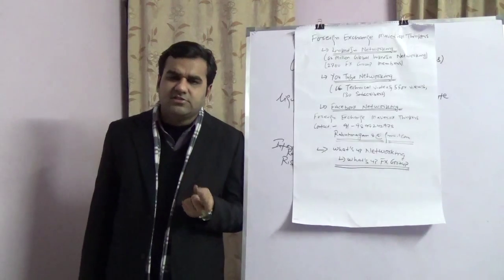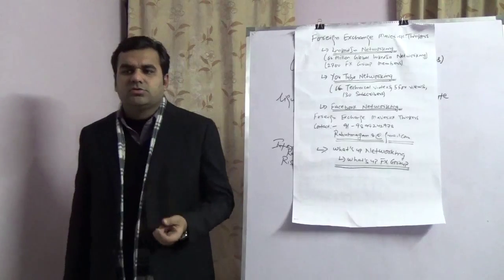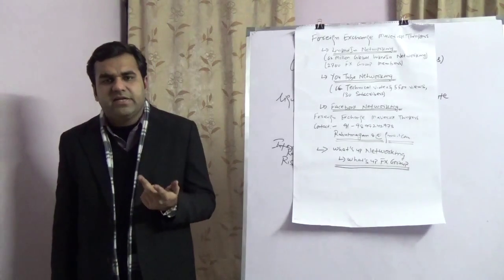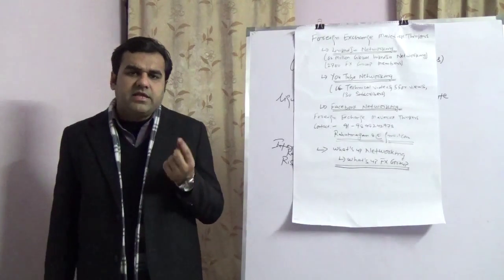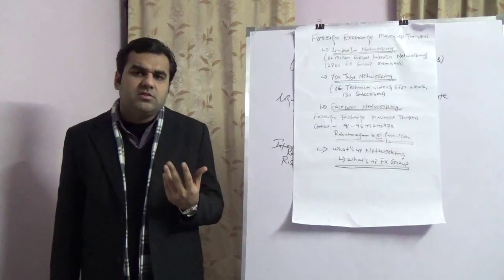IFRS 7 speaks about qualitative disclosures and quantitative disclosures. It speaks about disclosures of each and every asset and liability that the corporate has in the books and the impact of that asset and liability the corporate is going to see in the books.